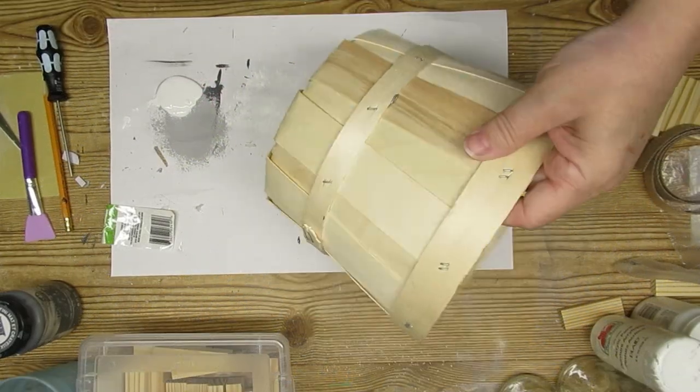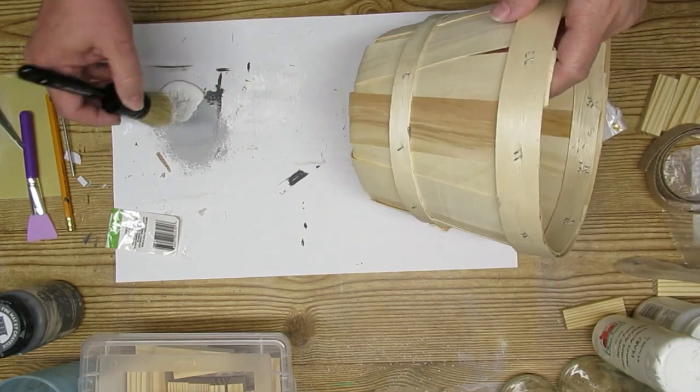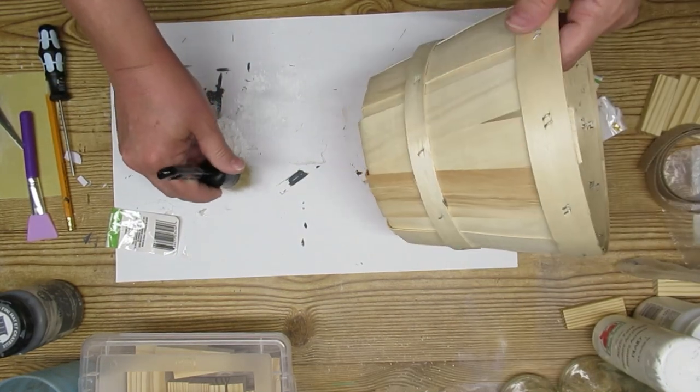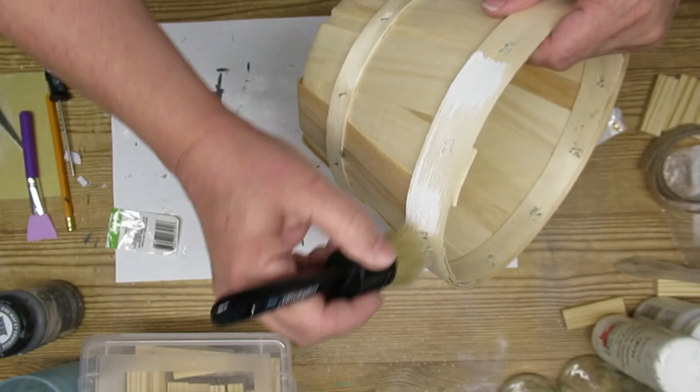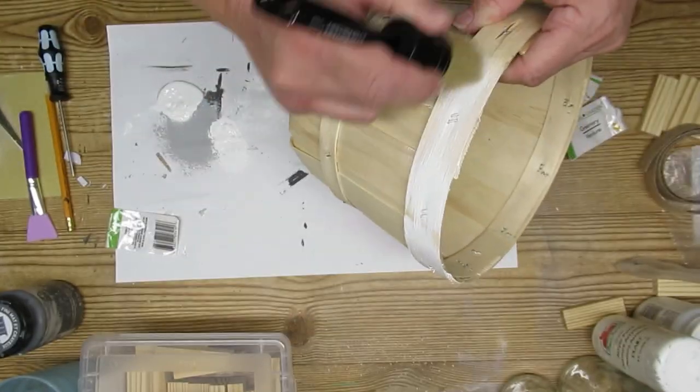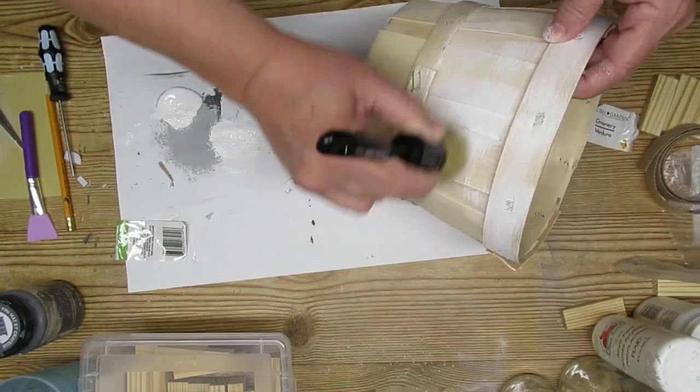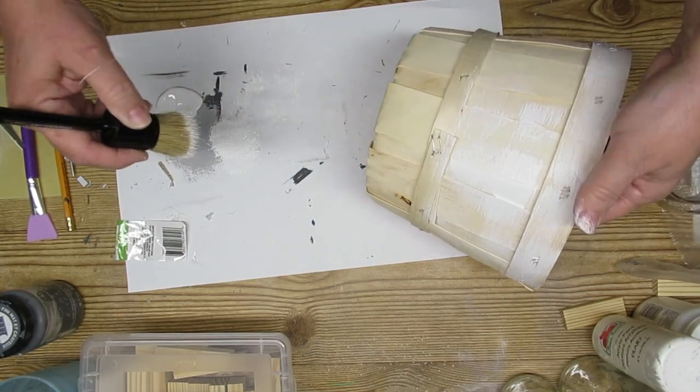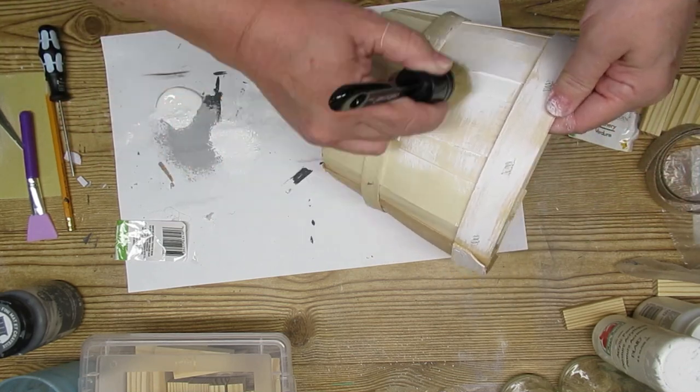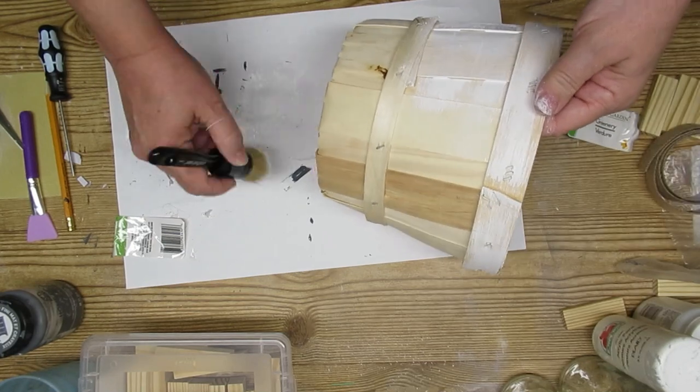This project is super easy. I got this little bushel basket from the thrift store for $1.99, and I'm taking some white chalk paint and a big fat brush, and I'm just going to dry brush all the way around. At first, I started just with the top band because I wasn't quite 100% sure that I wanted to do the whole thing white, but once I got around to it, I decided, yep, the whole thing's going to be white.